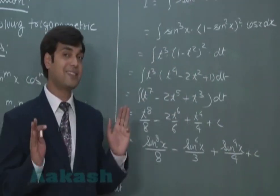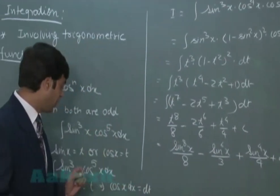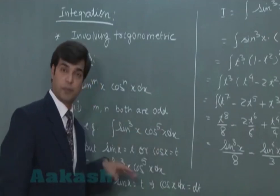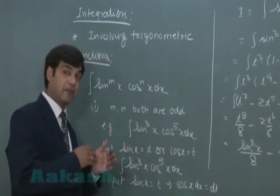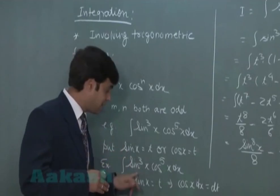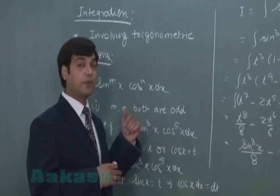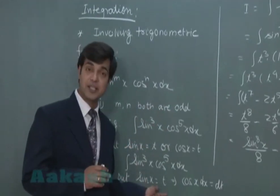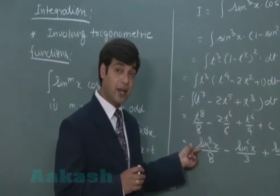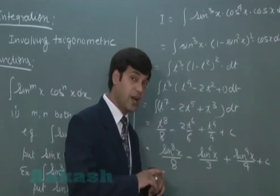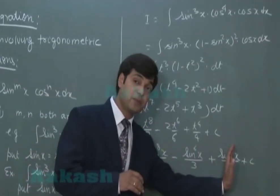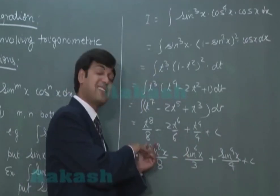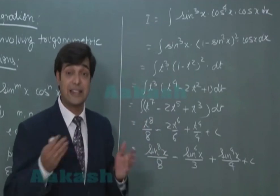Sabse pehli cheez is tarah ke functions ko integrate the time when you have a term involving both powers as odd. Look at the options. If options are having series of sin in power, aap ne sin(x) ko t rakh diya. If your options are having series of cosin with powers, aap cos(x) ko t rakh diya. Kyunki, yahaan jo answer aya, mera sign ki term mein a raha hai. Agar, maine cos(x) ko t rakha, meri series cos ki power terms mein aayegi. Otherwise, it will be very difficult for me now to change this sign in terms of cos. It will take again some time.